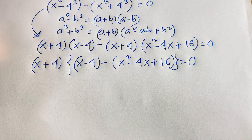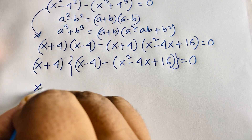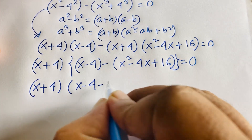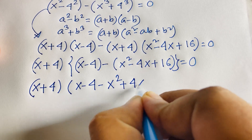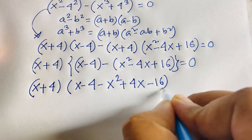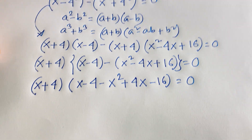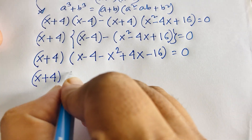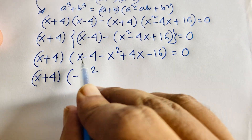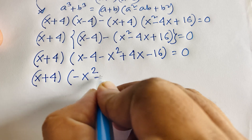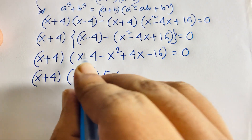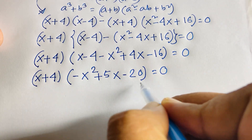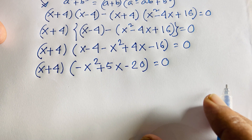Expanding inside the bracket: (x minus 4) minus (x squared minus 4x plus 16) equals negative x squared plus 4x plus x minus 4 minus 16, which simplifies to negative x squared plus 5x minus 20. So we have (x plus 4)(negative x squared plus 5x minus 20) equals 0.